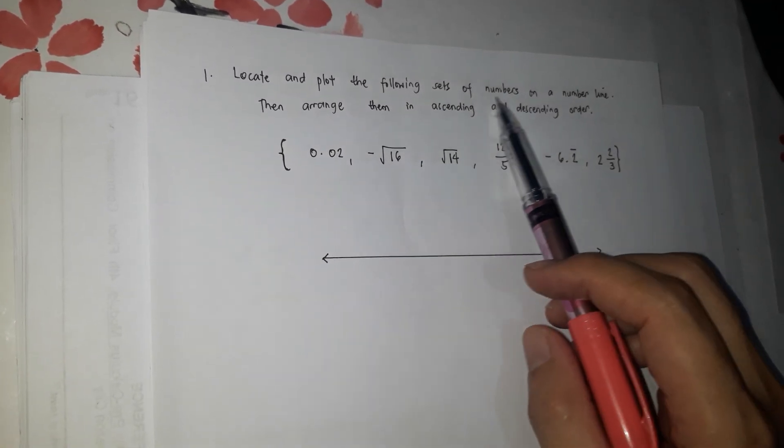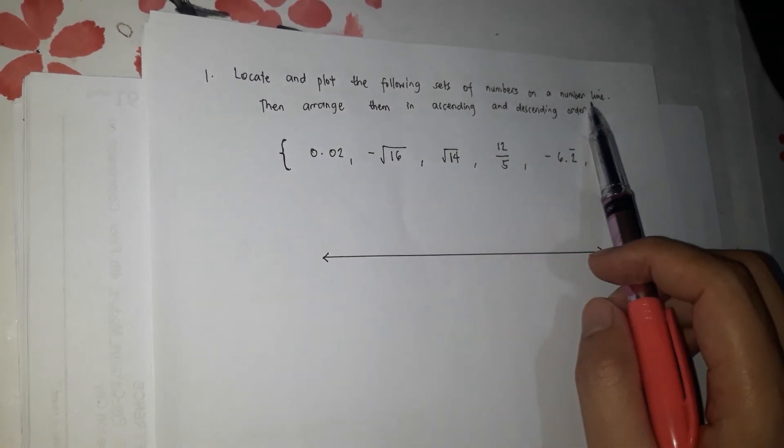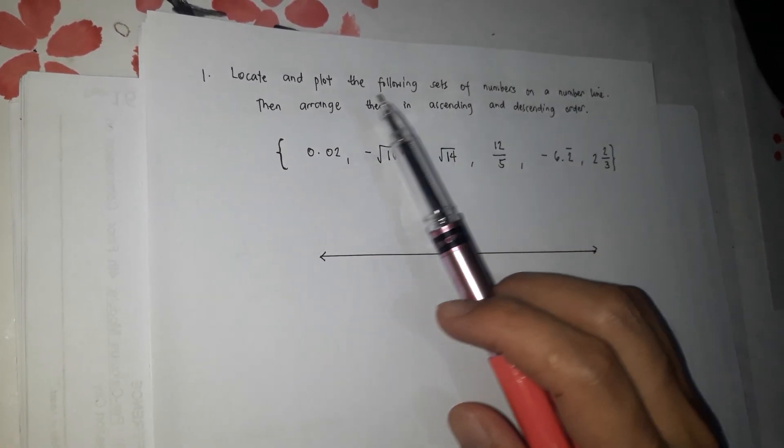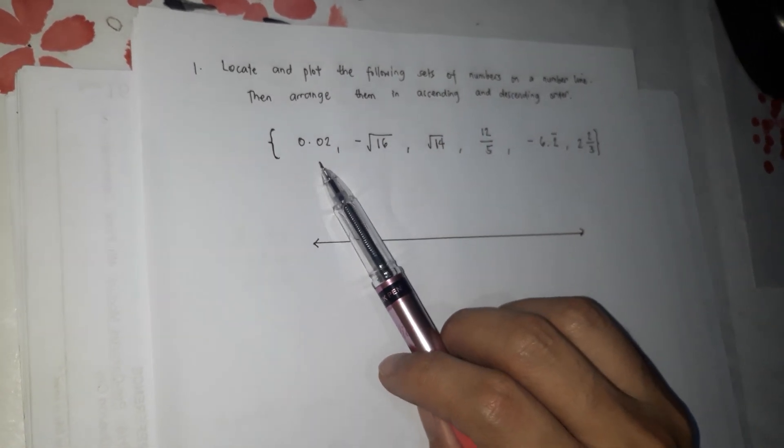Now we're going to locate and plot the following set of numbers on a number line, then arrange them in ascending and descending order. These are the numbers: 0.02, negative square root of 16, square root of 14, 12 over 5, negative 6.2 bar, and 2 and 2 thirds.